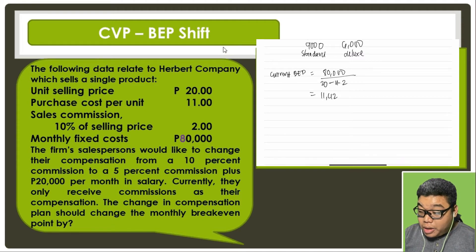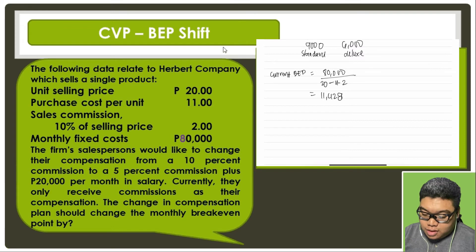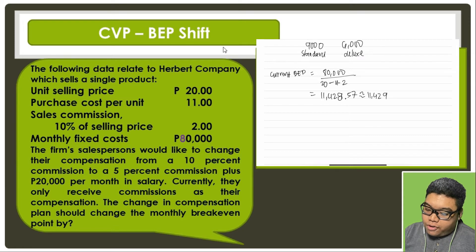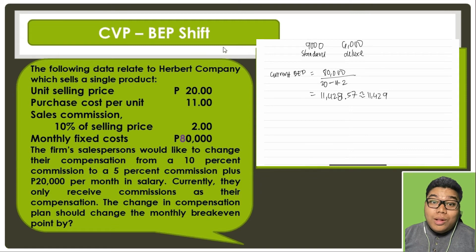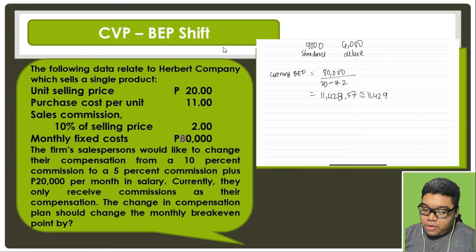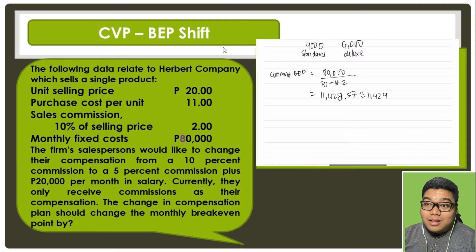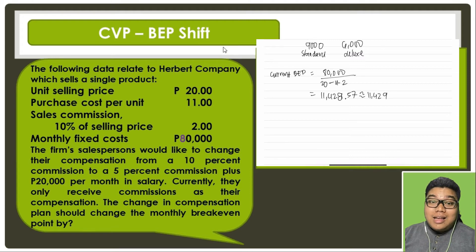That gives us 11,428.57, so the break-even point is 11,429 units. If the answer is 11,428.57, we cannot sell fractional units. Remember that in break-even planning, we need to get a quantity where we will not have losses but are not yet in a profit state. If we have a fractional answer, we round up rather than round off.